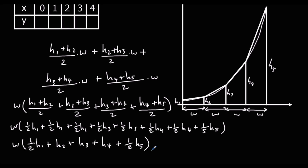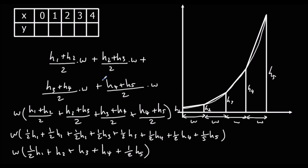So to apply the trapezium rule, this is all we need to do: put the width outside the bracket — whatever the gap is, in this case 1 — then half the first value, add all the middle values, half the last value, and multiply by the width. That works out the area of all the trapeziums together.